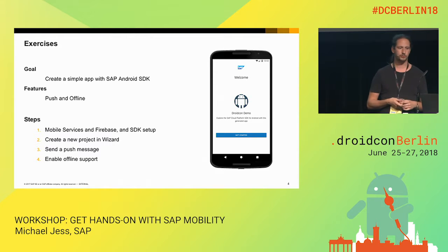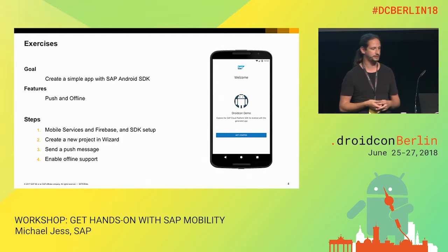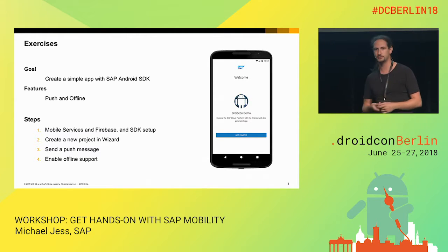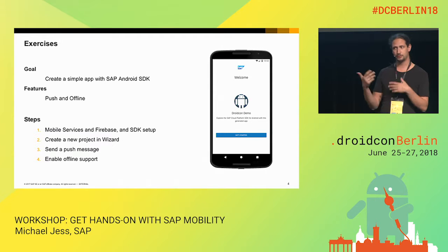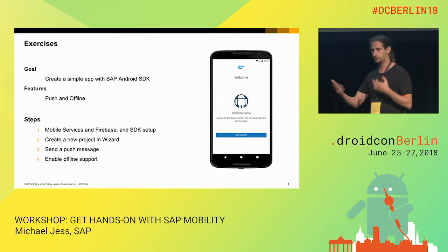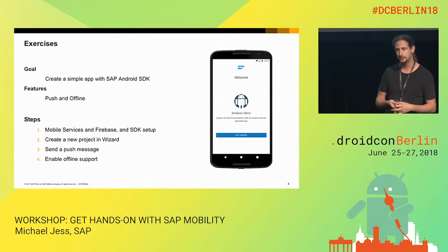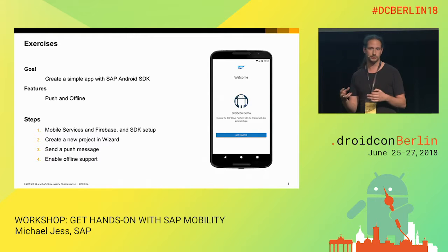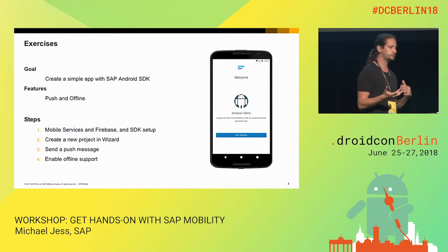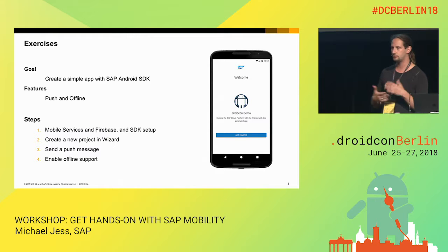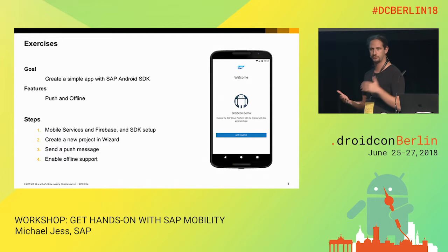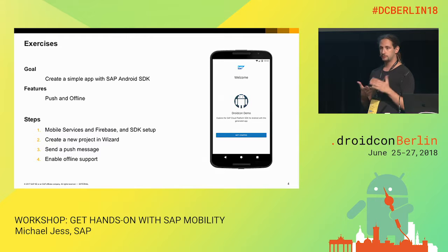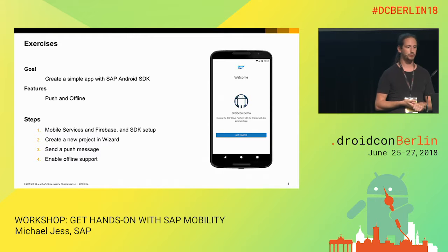The second thing, something more exciting: offline. The steps for this are essentially: number one, you need SAP Cloud Platform mobile services set up and enabled in your account. In order to get a push key and the API keys, you will also need a Firebase account. The reason is that we do not have a native push provider, but we are abstracting over platforms — we support Firebase push and Apple push. Then we are simply going to create a project using our tooling, send the first push message, and enable offline support.